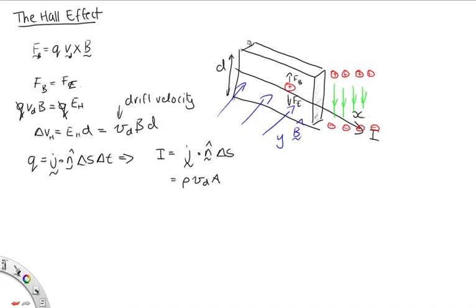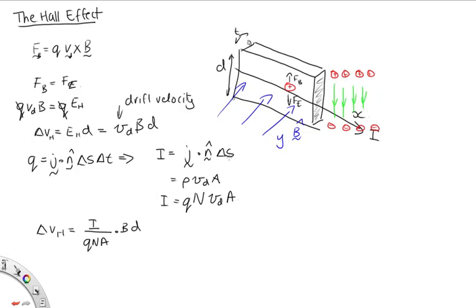So in this case, this would be the surface area through which the current is passing. And finally, we can also write this charge density as the size of each charge times the number of charge carriers per unit volume. So we have I = q n V_d A. Substituting that in for V_d, we have that our Hall voltage is equal to I over Q N A times B d. If we call the thickness T, then our area is T times d, so the d's cancel out, and we get V_H = IB over QNT, where T stands for the thickness.